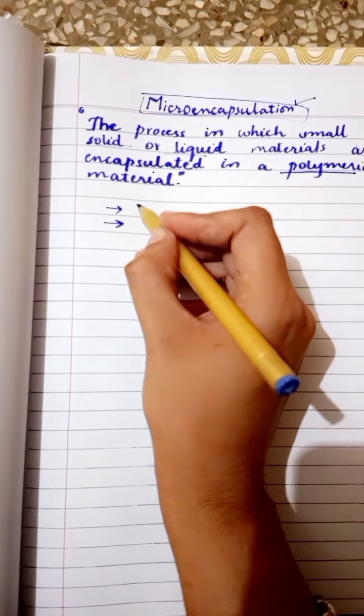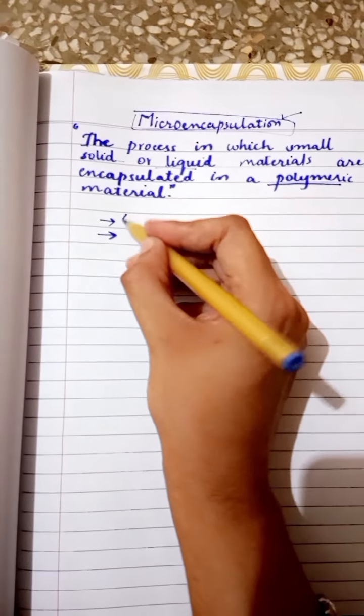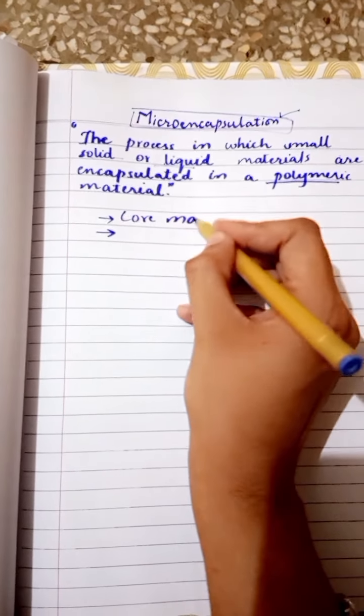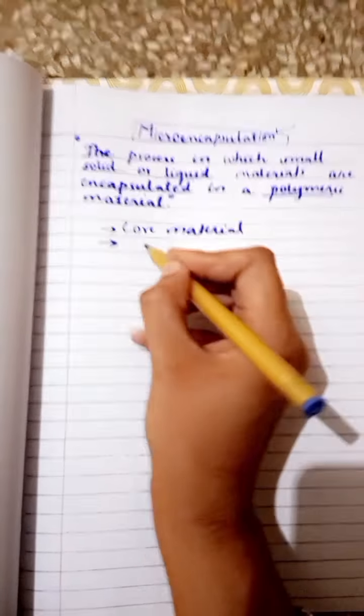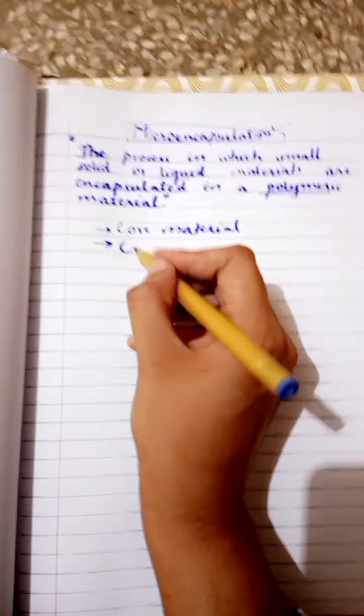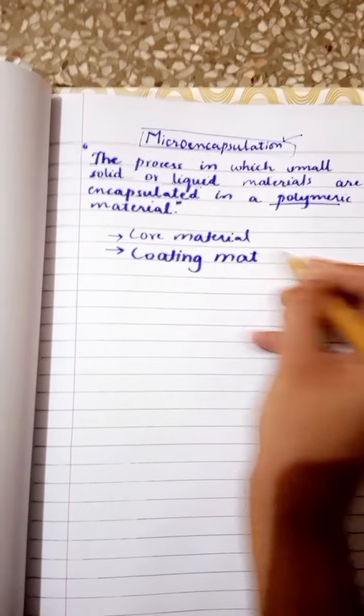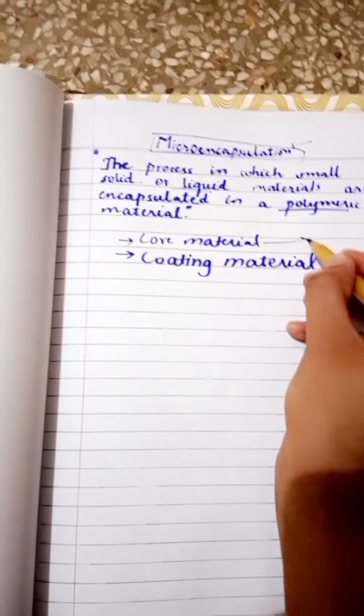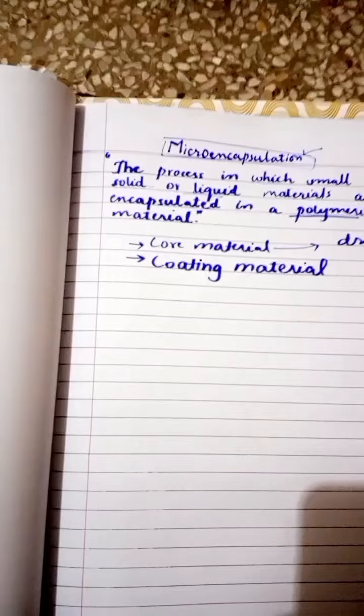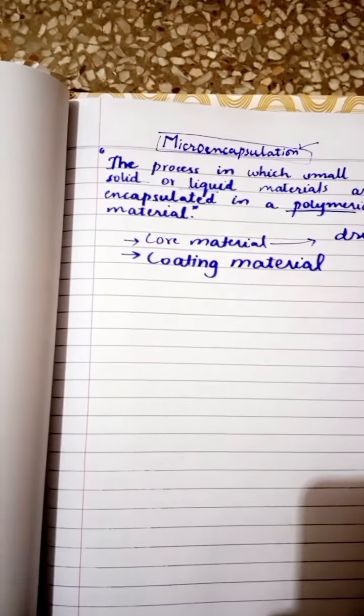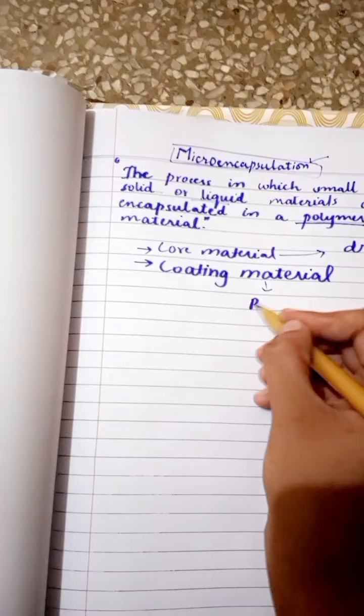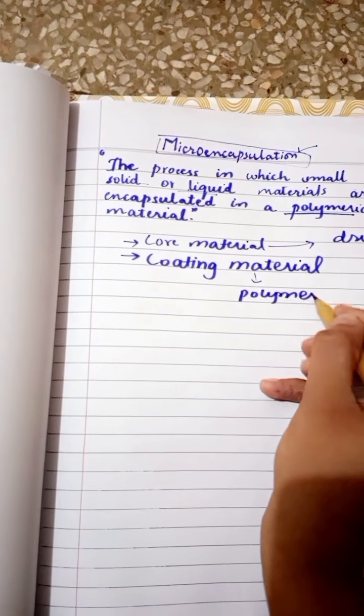Two types of materials are included in this process. One is the core material, the other one is the coating material. The core material is a drug or the excipients which are present inside, and the coating material is mostly the polymeric material which is used for coating the drug.